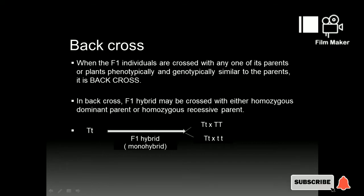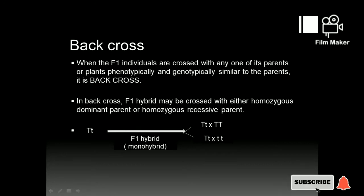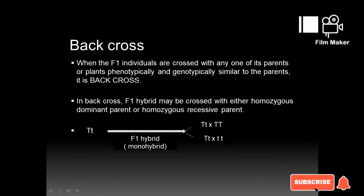Today we will talk about inheritance of one gene. First, we will talk about the tall plant and dwarf plant crossing. The same tall plants in the F1 generation are phenotypically tall, but genotypically are called capital T and small t. The F1 hybrid may be crossed with either the homozygous dominant parent or homozygous recessive parent.